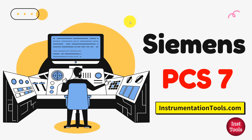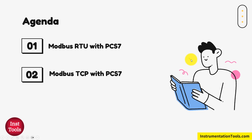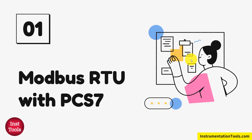We will be discussing how to integrate Modbus devices into the Siemens PCS7 architecture in this video. Basically, Modbus is available in two different variants: Modbus RTU, which is Remote Terminal Unit, and Modbus TCP, which follows Ethernet principles. First, we will discuss Modbus RTU.